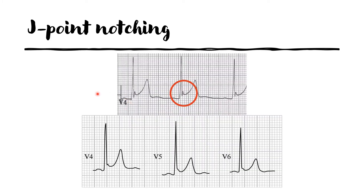This slide highlights another characteristic feature of J point elevation: J point notching, which is the slurring of the QRS complex towards its end. In some EKGs this appears as a very prominent fish hook pattern, while in others it can be as subtle as a slight slurring at the end of the QRS complex, visible in leads V4, V5, and V6. These are usually seen in the lateral leads, generally between V4 and V6.